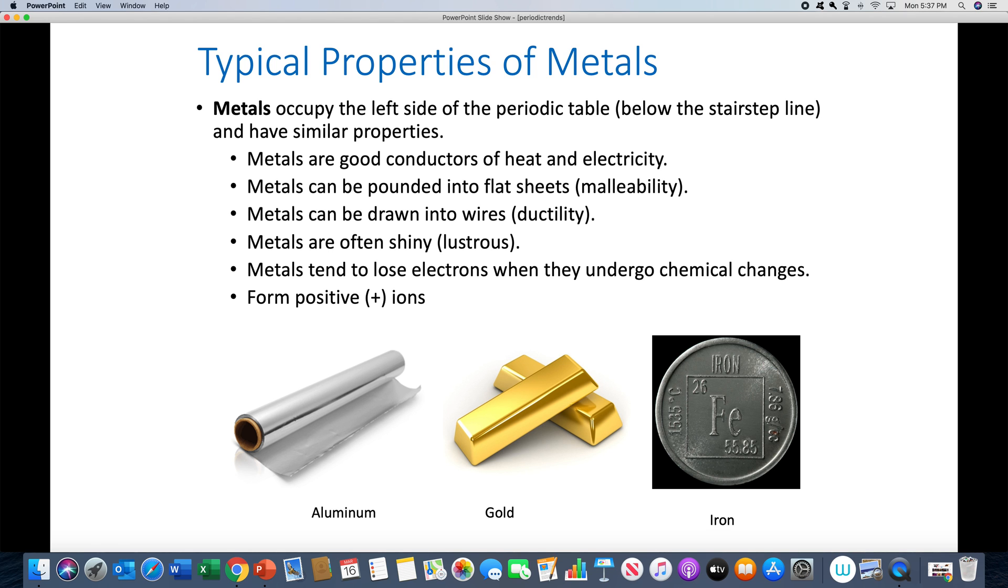So the elements are broken up into two major classes. There are metals and there are non-metals, and there's also what are called metalloids. So let's start with metals. Metals are on the left side of the periodic table. If you look at the periodic table that's on our canvas site, there's a darkened stair step line. Things that are below the stair step and to the left of the stair step are metals. And you'll notice on the periodic table, most of the elements are metals.